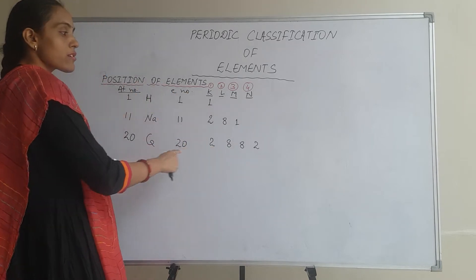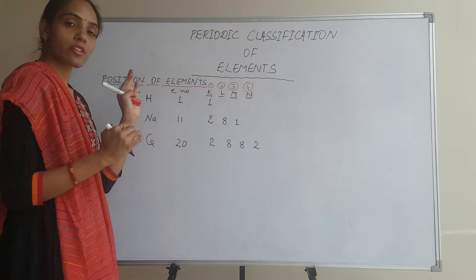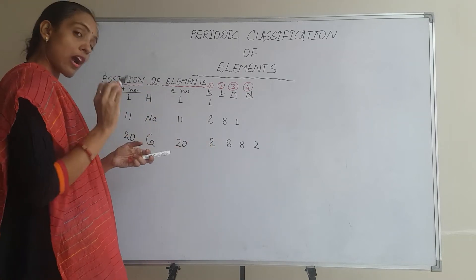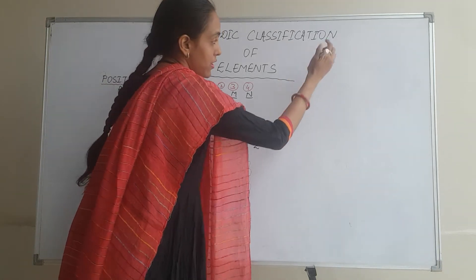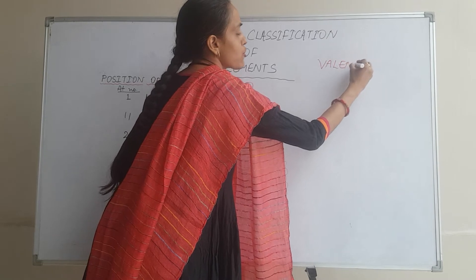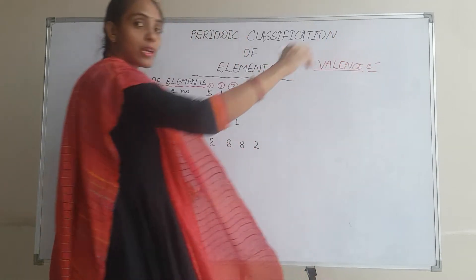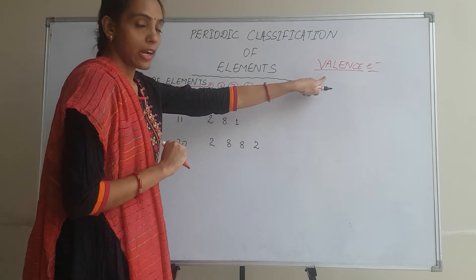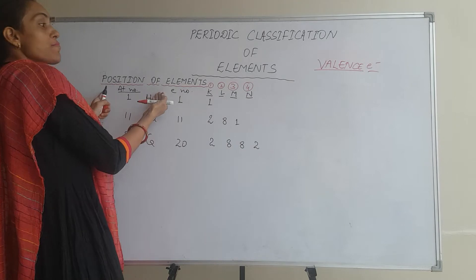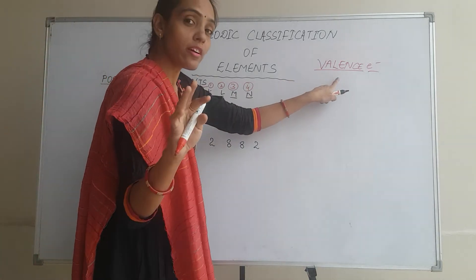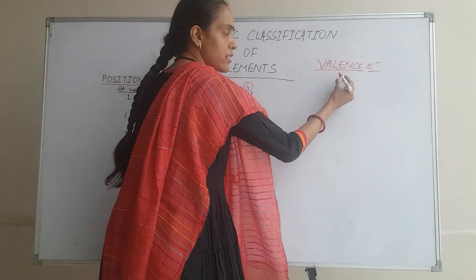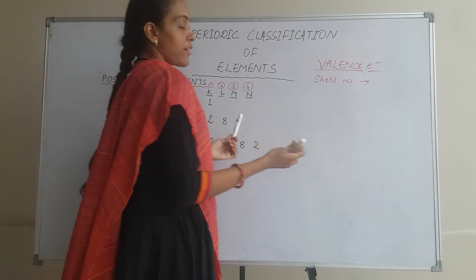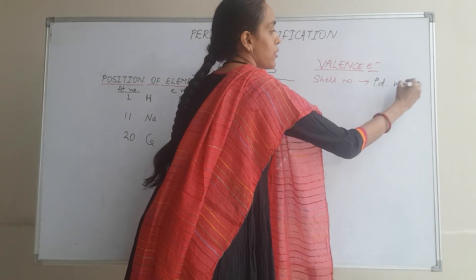What we are discussing about configuration is for 1 to 20 elements only. Even the position of elements we can discuss by this method for 1 to 20 elements. Focus here: valence electrons are very important. They play an important role — they decide the valency of the atom, the chemical properties of the atom, and now the position of the element as well. The shell number in which the valence electron exists will decide the period number of that particular element.